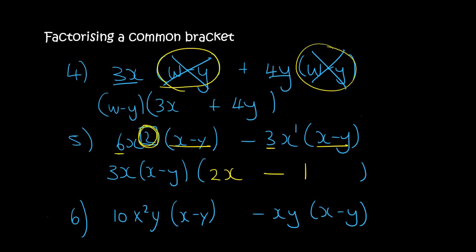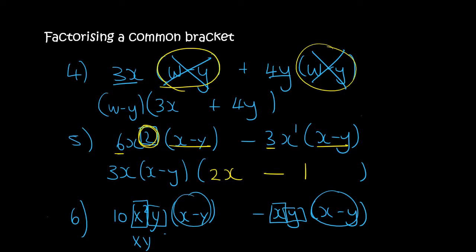For the last one, there are 2 x's here and 1 x here, so you can definitely take out 1x. There's 1 y here and 1 y here, so you can definitely take out 1y. And there's an x minus y in both of them, so we can take that out too. In the first term there's still going to be 1x left and a 10, so we can say 10x. In the second term there's nothing left, so we just say minus 1.